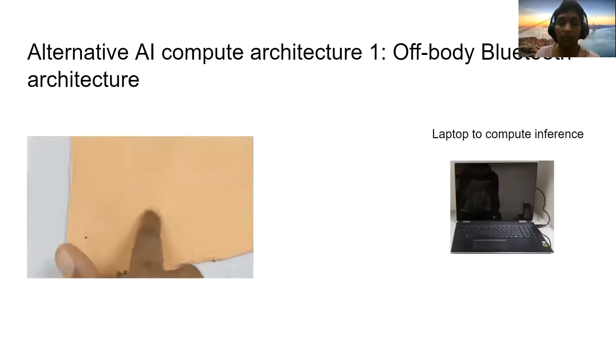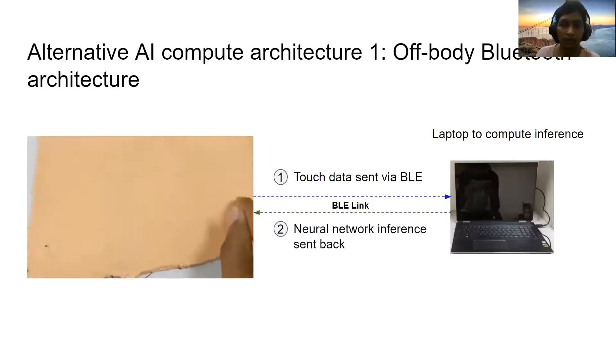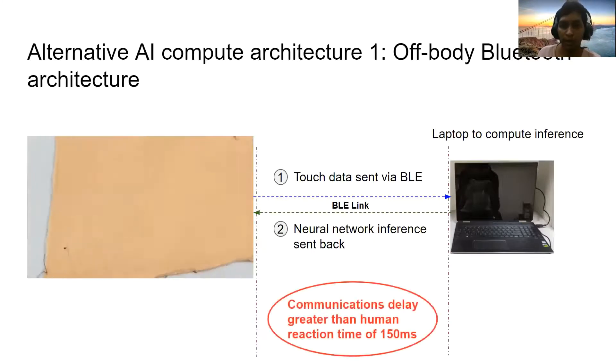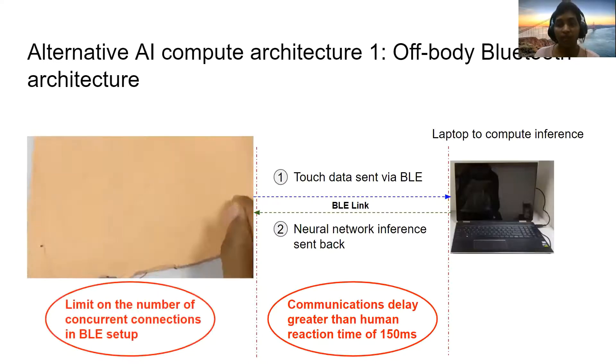Whenever someone touches the artificial skin or writes something on the artificial skin interface, the touch data is sent via BLE link to the laptop, the inferences are computed on the laptop, and the neural network inference is sent back to the artificial skin. What's the problem with this architecture? This communication loop is usually higher than the human reaction time of 150 milliseconds. In addition, when we are implementing this setup on a full body suit, there will be a limit on the number of concurrent connections.